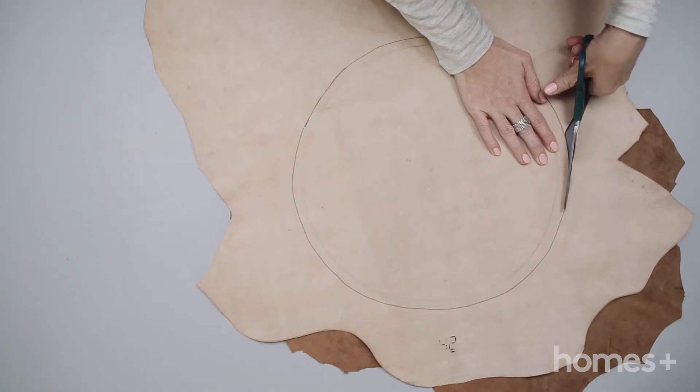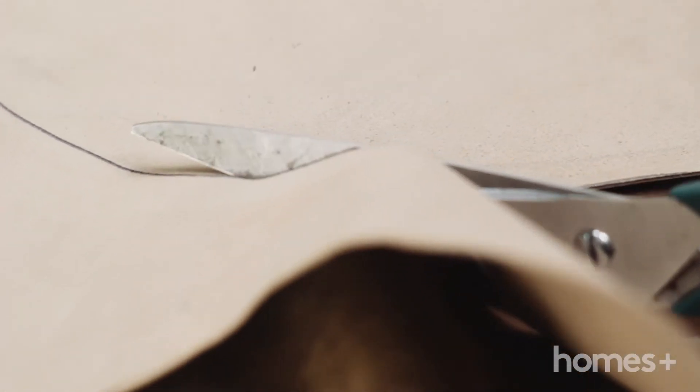Step 2: Cut out the bigger circle using scissors for thin leather or a utility knife for thicker leather.